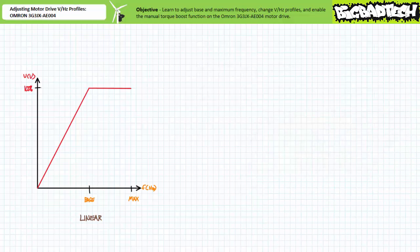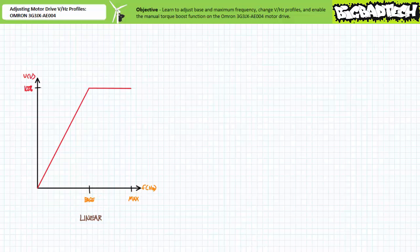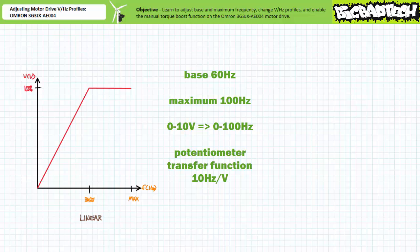Really there are only two key data points that define the simple linear volts per hertz profile: namely base frequency entry A003 and maximum frequency A004. From zero to base frequency, applied voltage is linearly proportional. Beyond base up to maximum frequency, applied voltage flat lines at 100 percent. When base is 60 hertz and the maximum is 100 hertz, note the external speed potentiometer's zero to 10 volt analog voltage input is scaled to represent the zero to 100 hertz range.